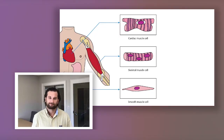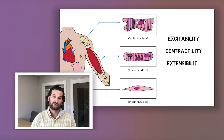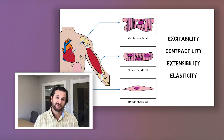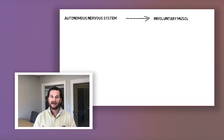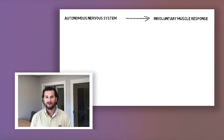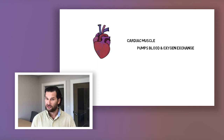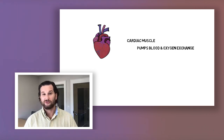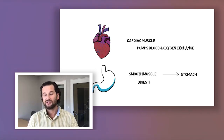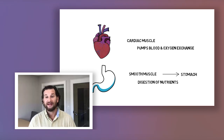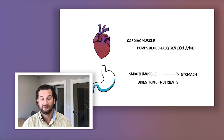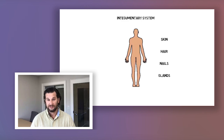The muscular system: know the anatomy. There are three types of muscles — cardiac, skeletal, and smooth. Know the anatomy of those three types and know muscle contraction. Know the ligaments and joints — there are three types: movable, partly movable, and synovial.